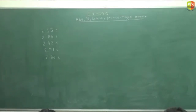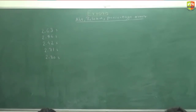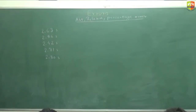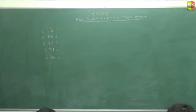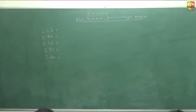Everything should only be up to 2 decimal places. Two values: 2.62, errors 0.7. The individual errors are 0.01, 0.06, 0.09, 0.09, 0.18.